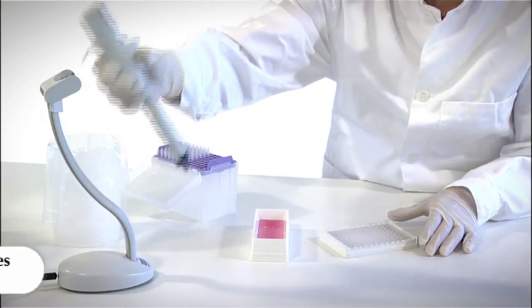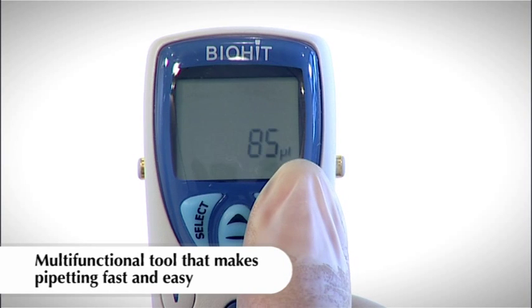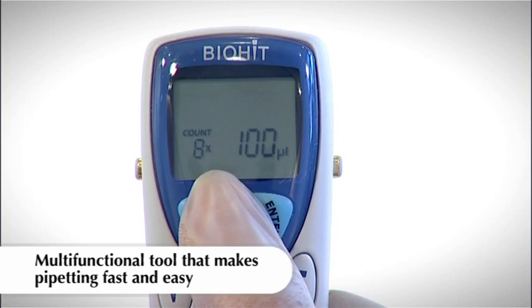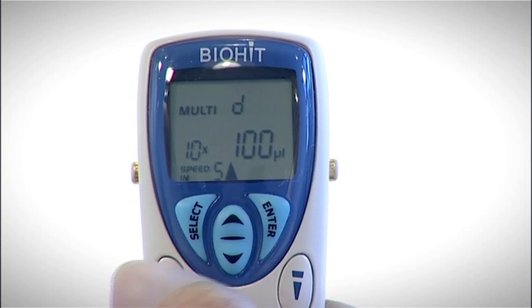E-Line is a real multifunctional tool. The pipette provides 11 different operation modes and 6 storage places for your favorite programs. The pipette is simple to program and makes your work fast and easy.